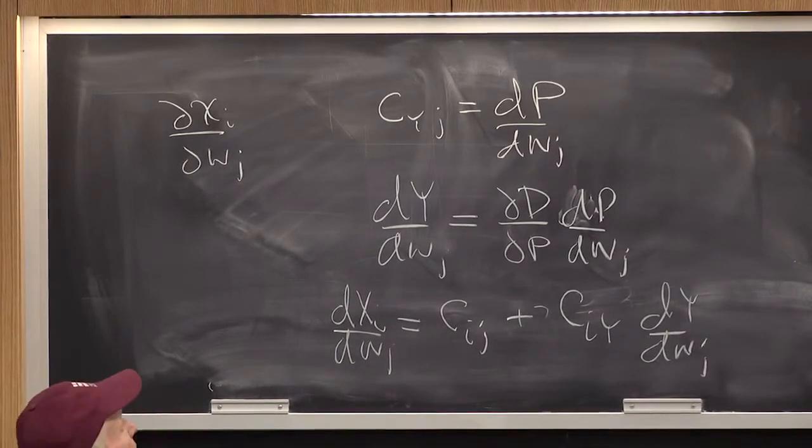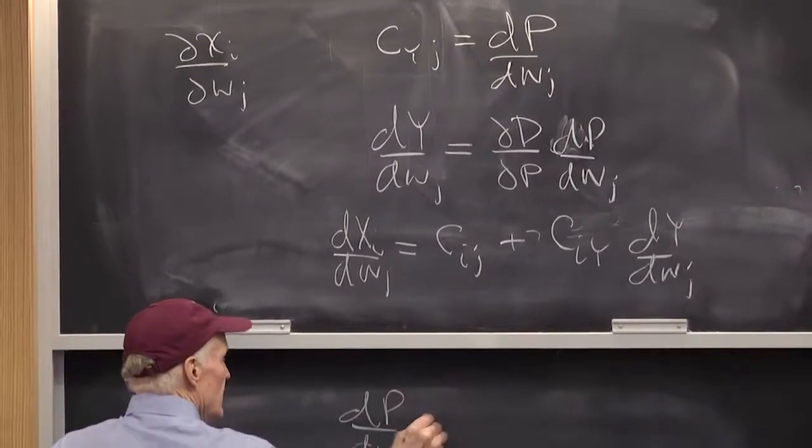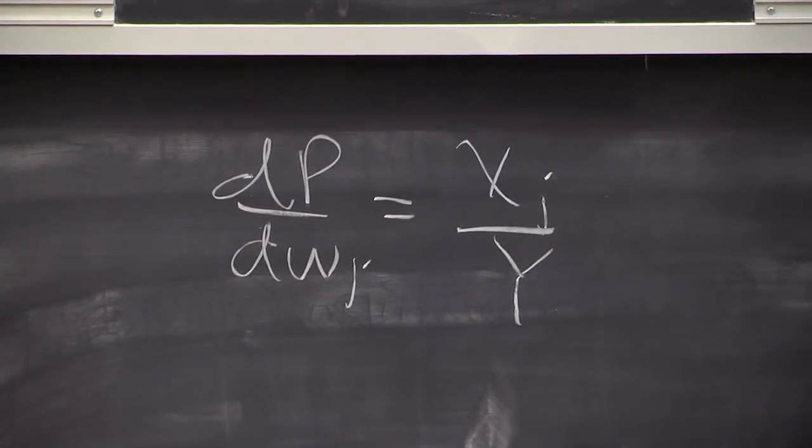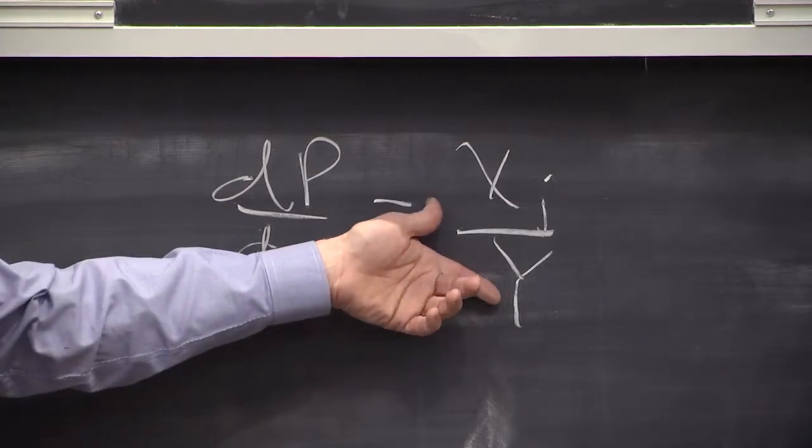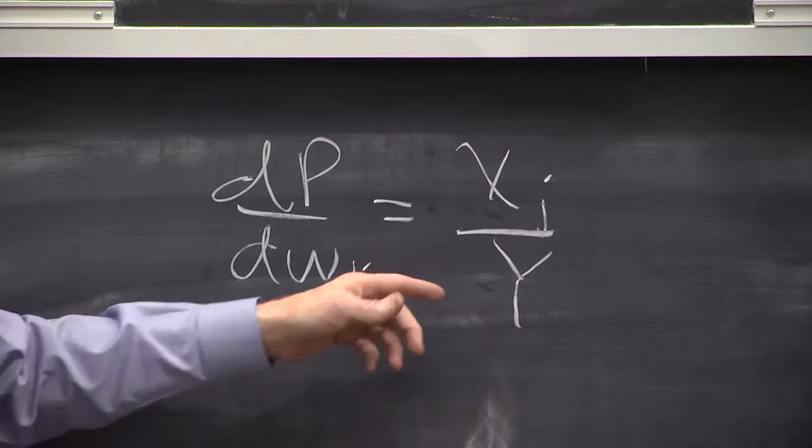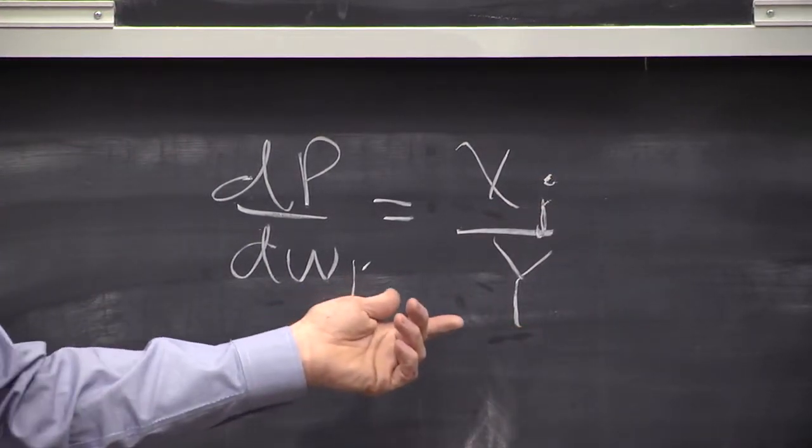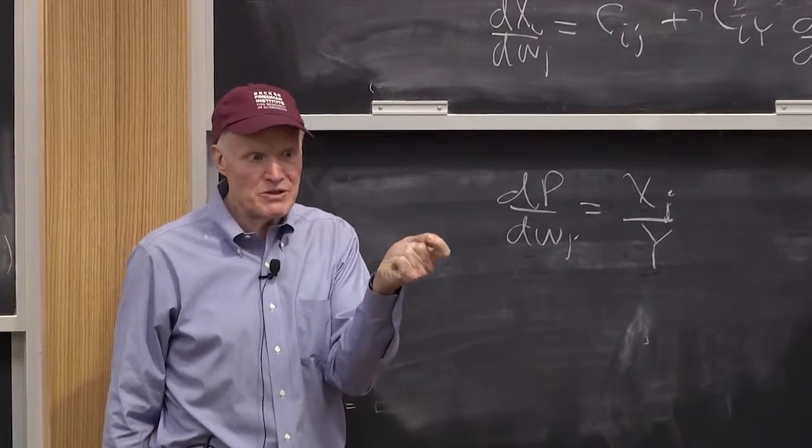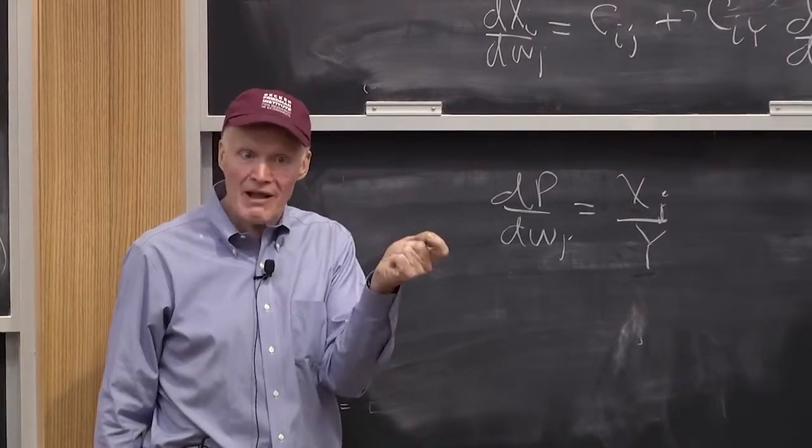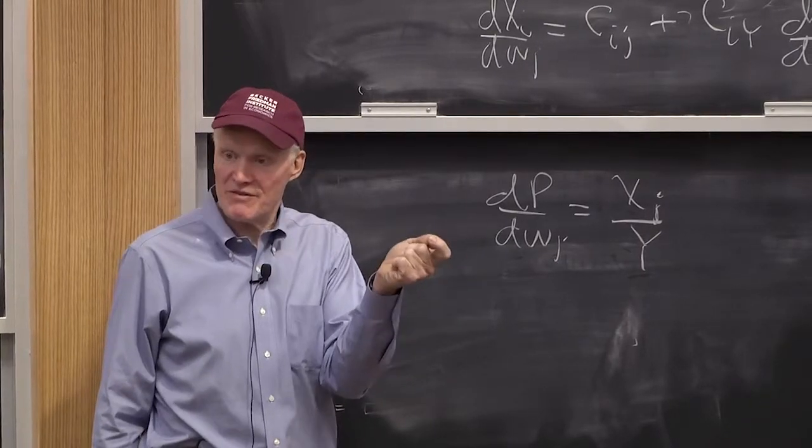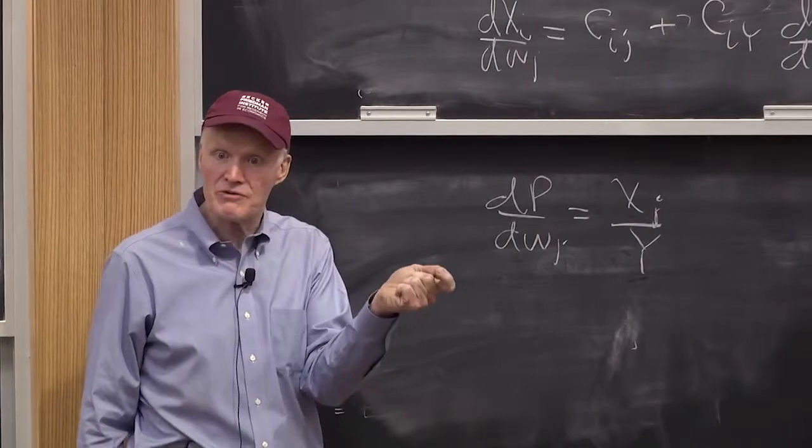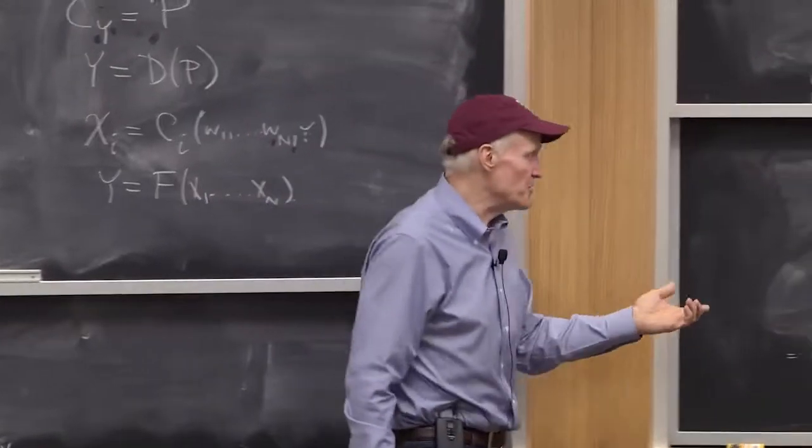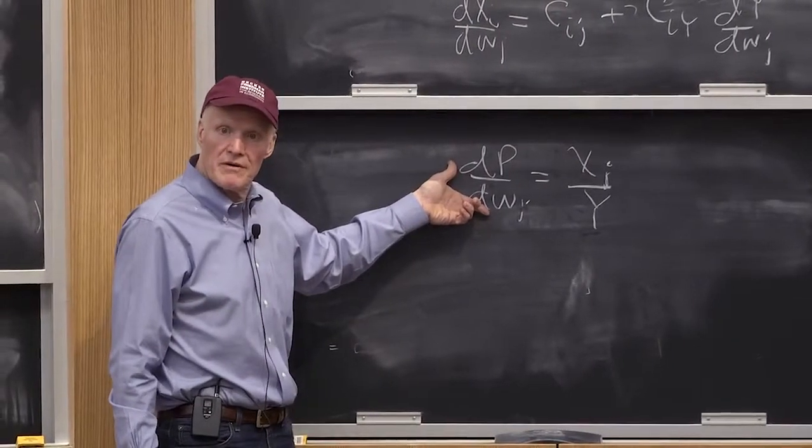So, doesn't this say that dp, dwj equals xj over y? That is, the change in the price, as I change the price of factor j, has to just be equal to how much factor j I use per unit of output. If I use one man hour per unit of output, and the wage goes up by a dollar per man hour, how much does my cost per unit of output go up? By a dollar. If I use two man hours per unit, and the wage goes up by a dollar, how much does my cost go up? Goes up two dollars. That's all this is. And because marginal shares are equal to average shares with constant returns to scale, that's going to be the change in the price.